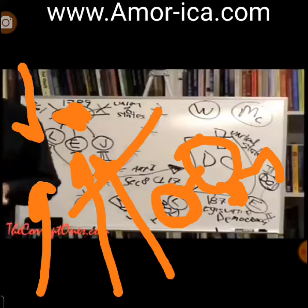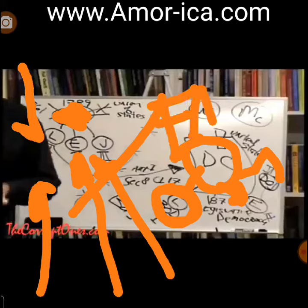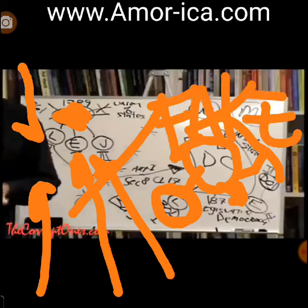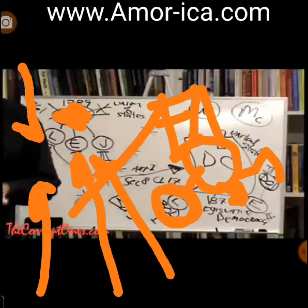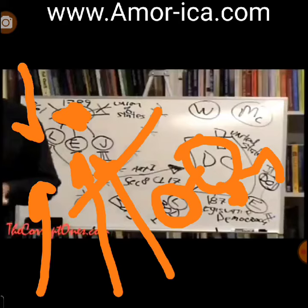It specifies how many electors each state is entitled to have. Since 1964, there have been 538 electors in each presidential election. The number of electors is equal to the total voting membership of the United States Congress: 435 representatives, plus 100 senators, and three electors from the District of Columbia.